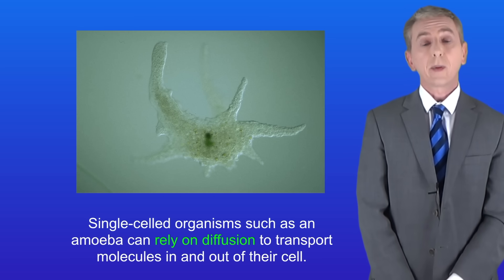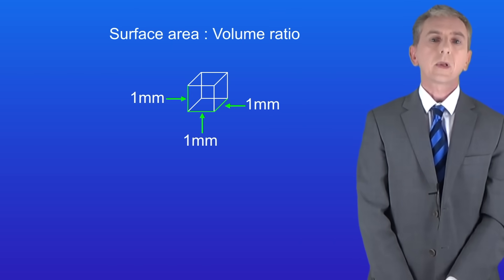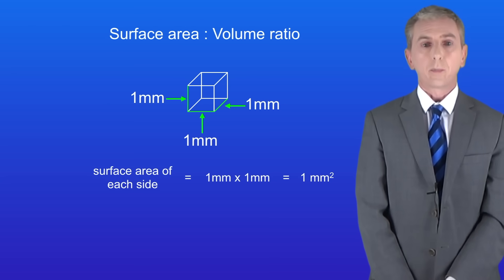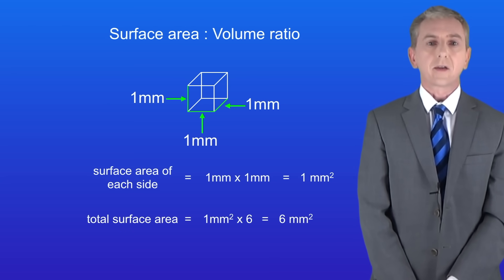In your exam you could be asked to calculate the surface area to volume ratio. Imagine I've got an organism shaped like a cube such as this one. The length of each side is one millimetre. The area of each side is one millimetre multiplied by one millimetre which is one square millimetre. I've got six sides so the total surface area of this organism is six square millimetres.